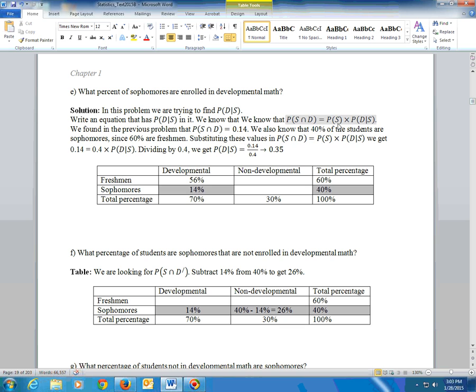That's 14%. And we also know that the probability of sophomore is equal to 40% because 60% of the students were freshmen, and so the remaining 40% must be sophomore. Put those into those two slots right there, and you would have 0.14 for this equals the probability of S, which is 0.4 times the unknown. So divide by 0.4, and you'll get 0.35. So that would be the answer to that problem.